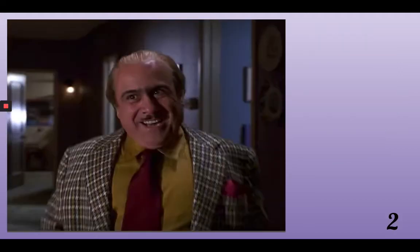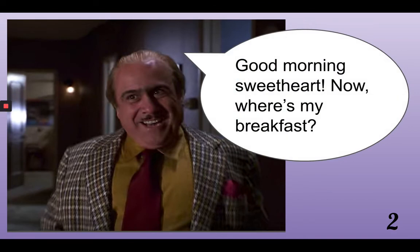In this scene, Mr. Wormwood has come downstairs. He's marched down the corridor. He's really excited for a day at work, and he doesn't realize that he's dyed his hair — he's got no clue. So he's walked into the kitchen and he's asked his wife where his breakfast is. I think Mr. Wormwood might be saying, Good morning, sweetheart. Now, where's my breakfast? And we want to turn that into a sentence using speech marks.